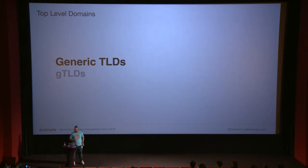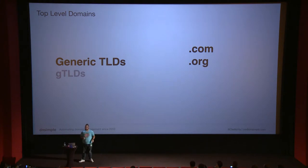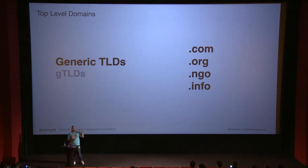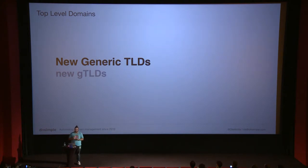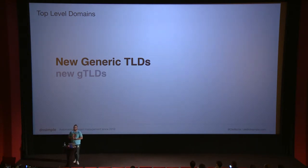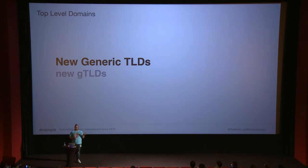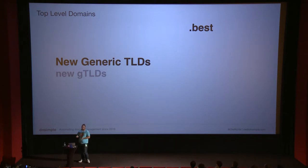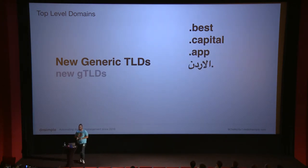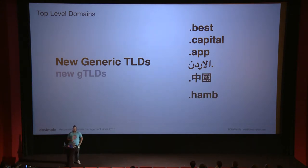And AF is Afghanistan — one of the really weird things on the internet is that you need to put ten bucks in an envelope and send it to Afghanistan to register your domain. Then there are generic TLDs — gTLDs — like .com, .org, .ngo, .info. These pre-date the new ICANN TLDs. Then there are new gTLDs: ICANN decided to broaden the domain namespace, so everyone can register their own GTLD — things like .best, .capital, .app, local TLDs like .hamburg, and also .pizza.